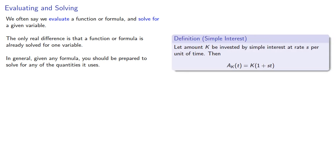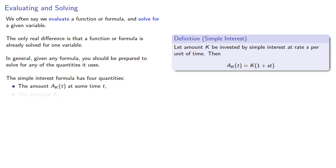For example, our simple interest formula has four quantities: the amount A(t) at some time t, the principal K, the interest rate s, and the time t. We can use the formula to calculate an amount and solve for any of the other quantities.